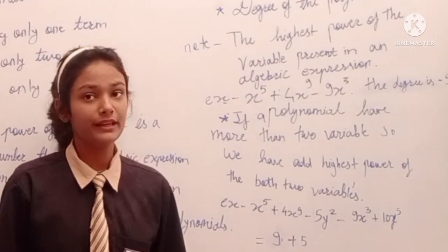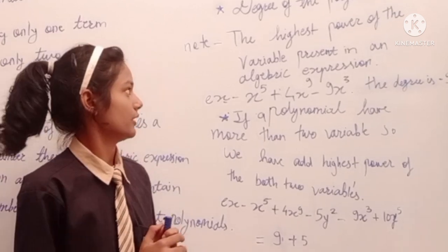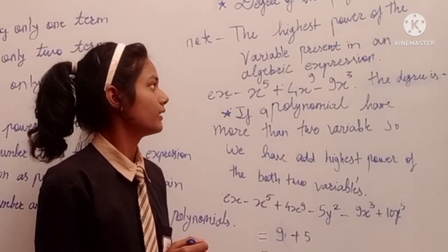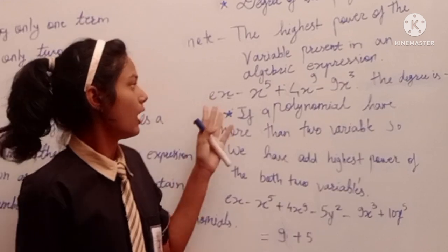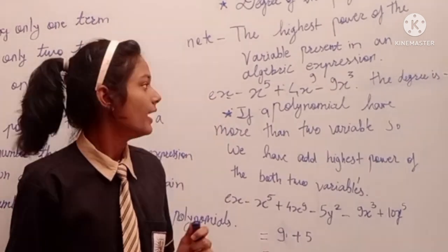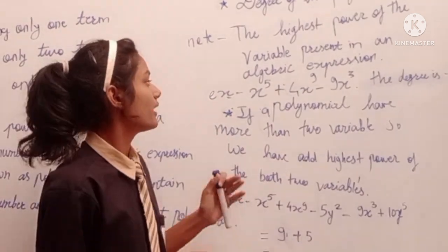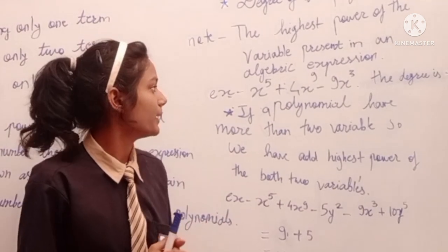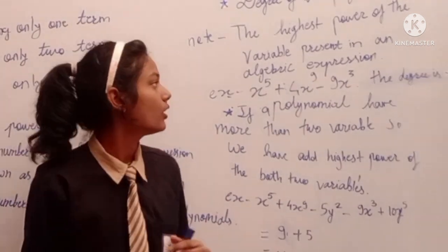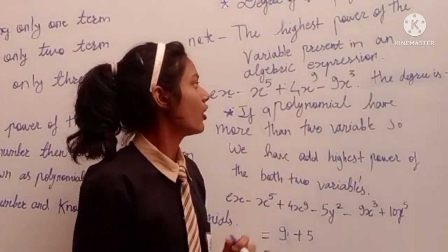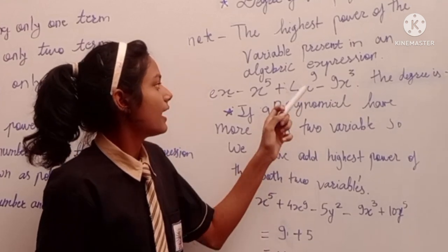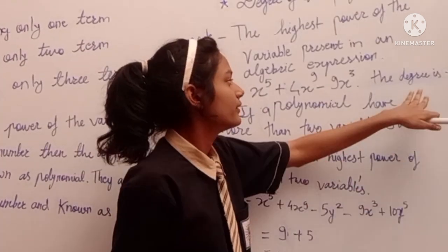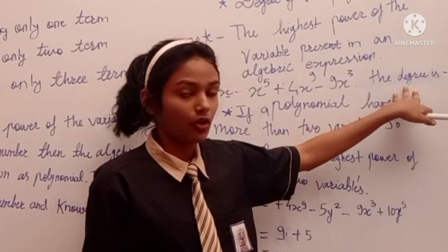Now let's take a look at what is the degree of a polynomial. The degree is the highest power of the variable present in an algebraic expression. For example, looking at the terms present, we have to identify the variable and find its highest power. You can see the highest power of the variable is 9, so the degree of the polynomial is 9.